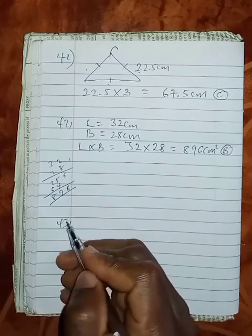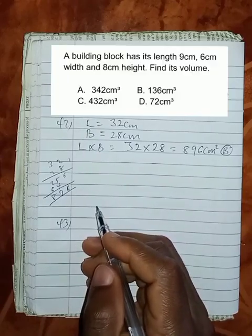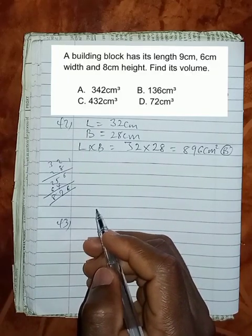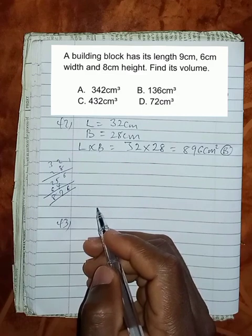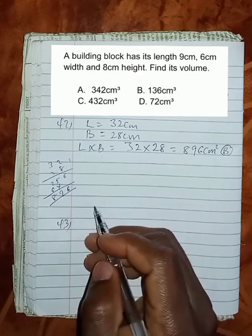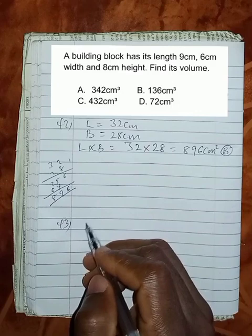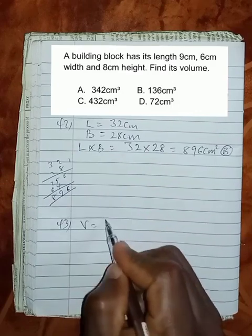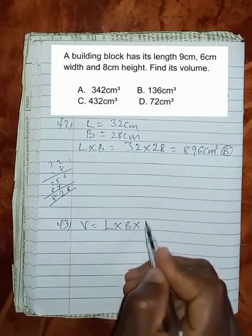Question 43 says, a building block has its length 9 cm, 6 cm width, and 8 cm height. Find the volume. That building block must be in the form of a cuboid. So volume will be length times breadth times height.